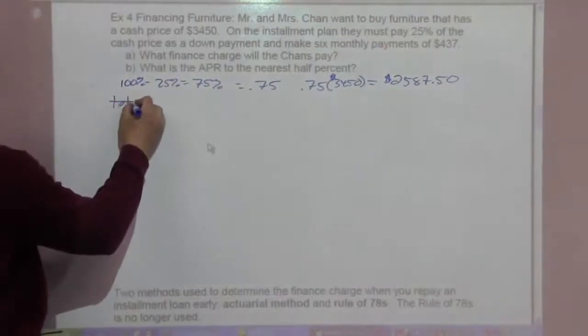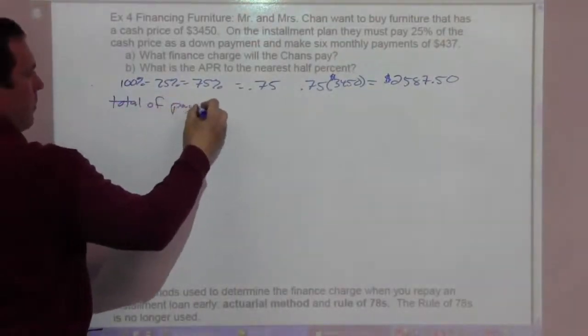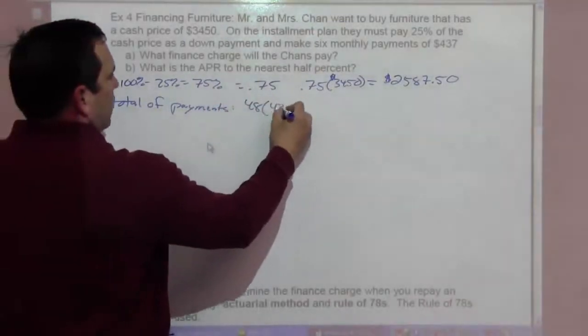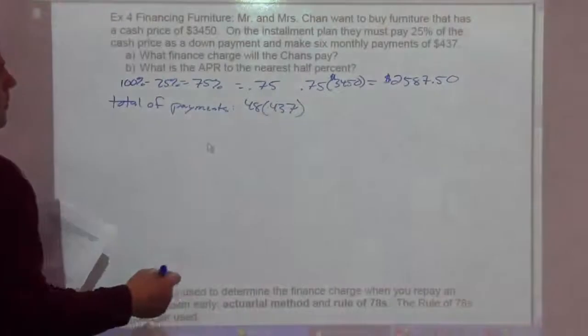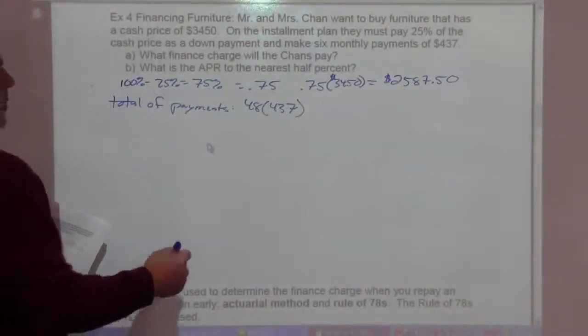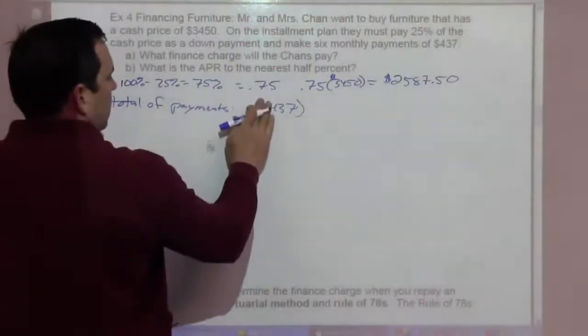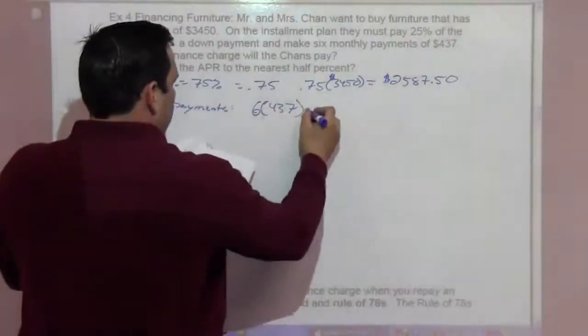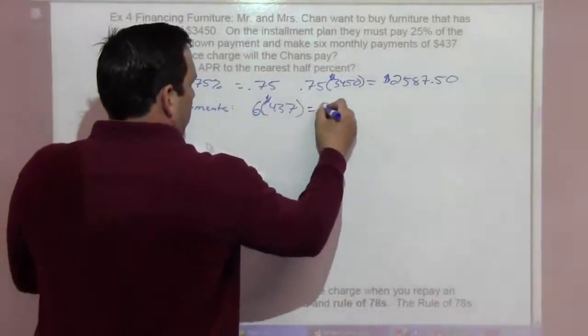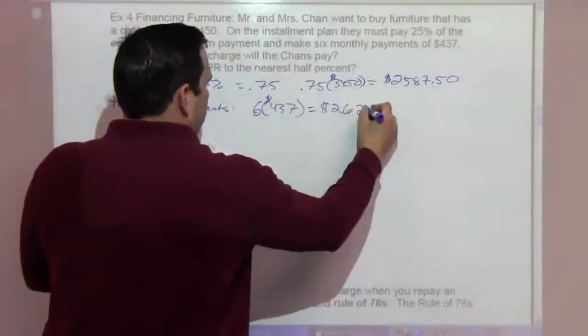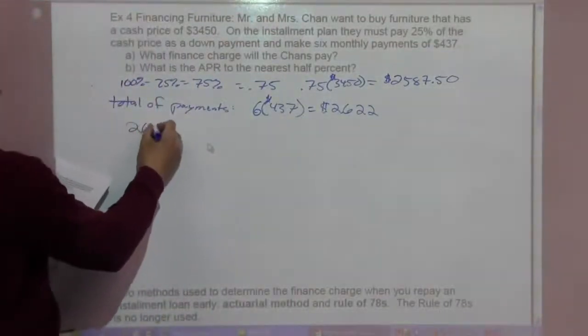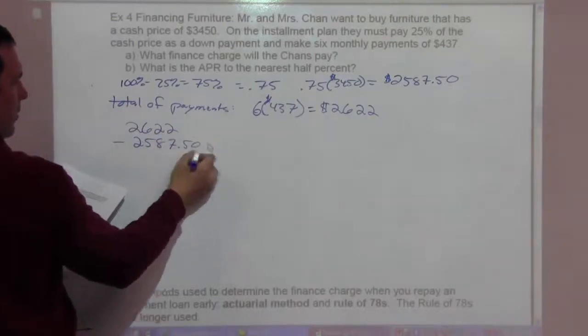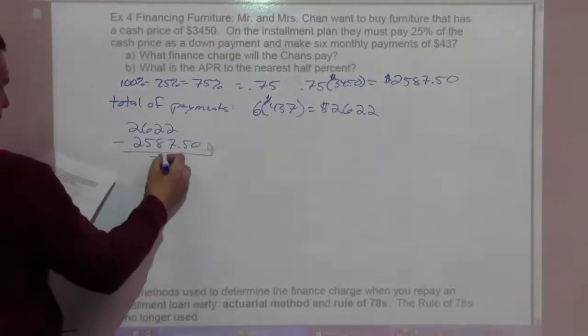Now, our total of payments is going to be, I'm sorry, not $4.48, it's six of these. Six times $437 is going to be $2,622. So $2,622 subtract $2,587.50, we get $34.50.